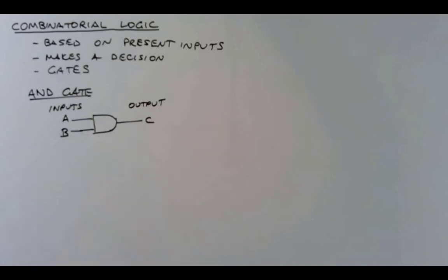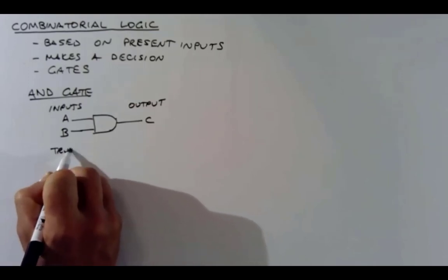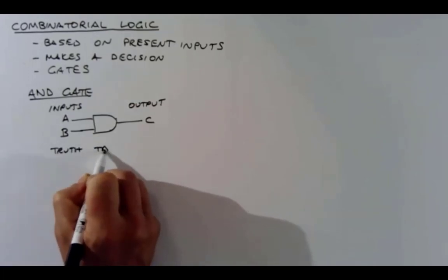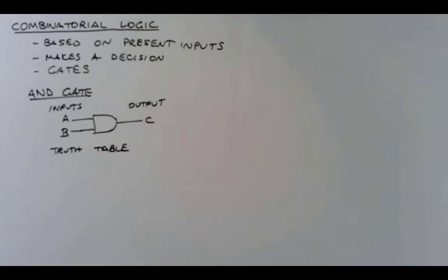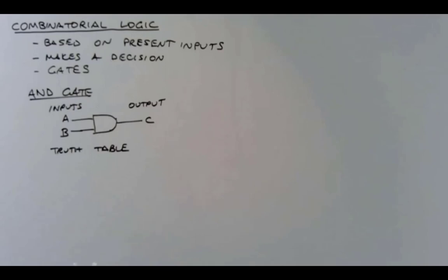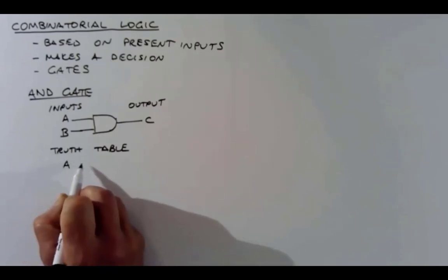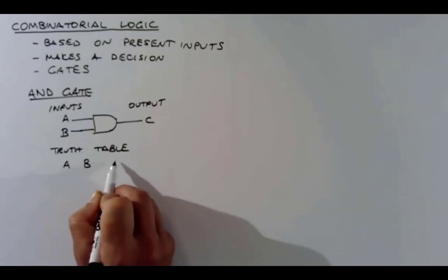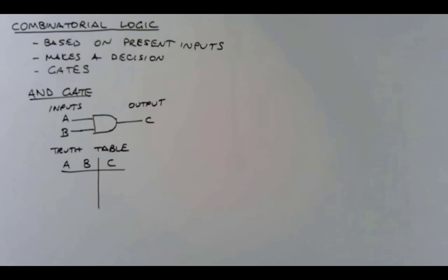The AND gate takes in two logical inputs and outputs a logical output — those are binary values. The AND gate answers the question: are both of my inputs true? That's why it's called an AND gate. You can describe that with the AND gate symbol. Another way to describe it is with a truth table. The columns are the inputs and the output, and you list all possible combinations of inputs.